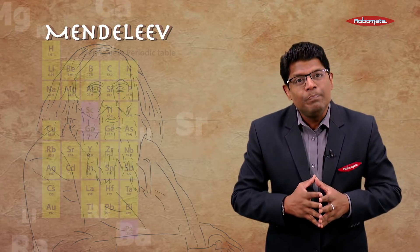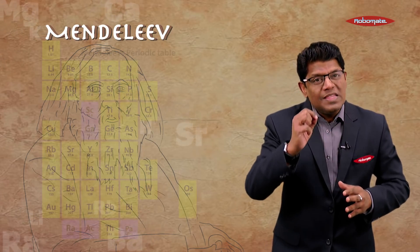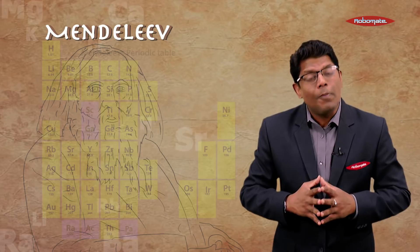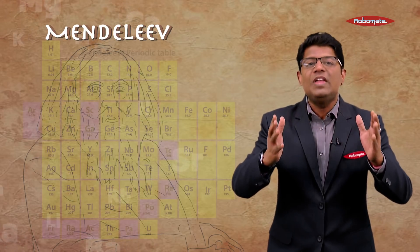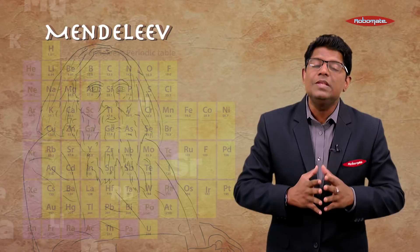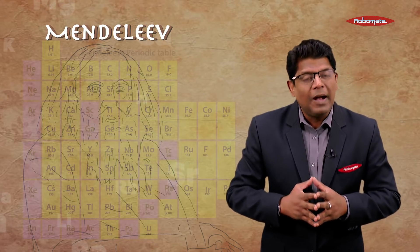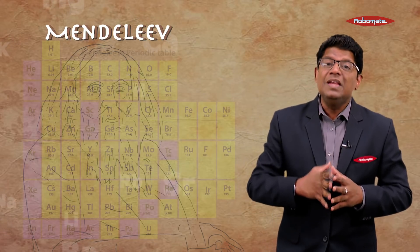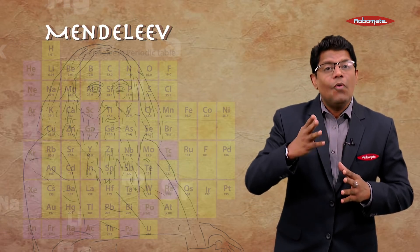Then came the next scientist, Mendeleev. During his time, there were nearly 63 elements. He also classified the elements on the basis of their atomic mass, but at the same time he also considered their properties. He could arrange most of the elements during his time, but due to a few drawbacks, his table also failed.